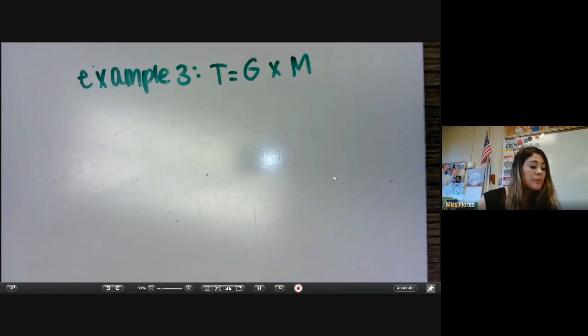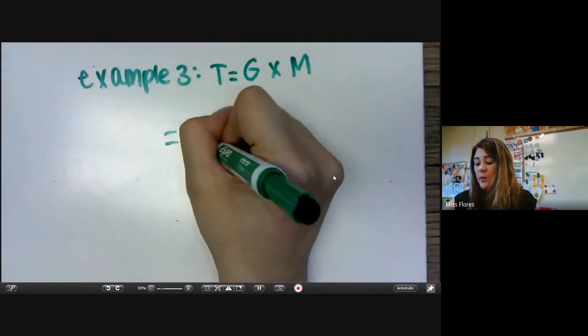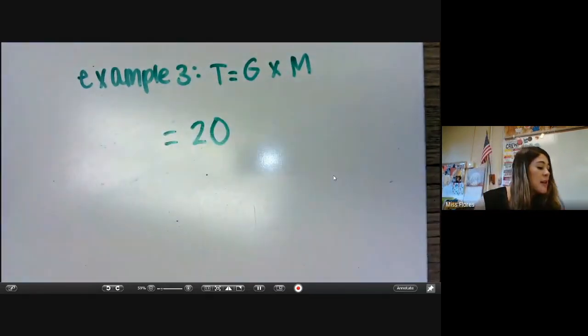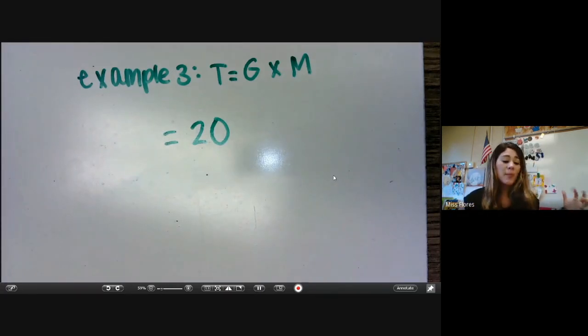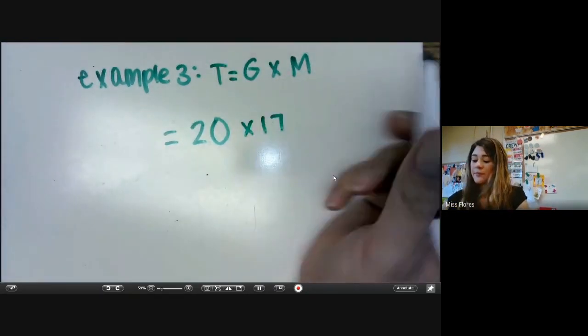So we don't know the total miles they drove because it says that the car holds 20 gallons of gas. So if the car holds 20 gallons of gas, that means we're going to plug that in for our gas. Then it says that he could drive 17 miles on each gallon. So we don't know how far he can go. So we're going to multiply 20 times 17.